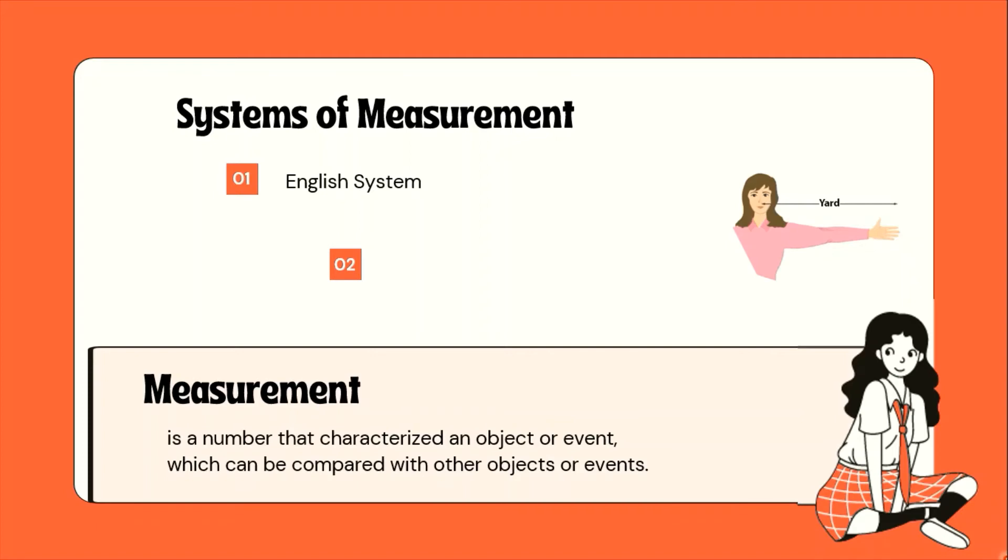Aside from English system, we also have what we call the metric system. Itong metric system, it only became the most used system of measurement by the 1900s. And this is first described by the Belgian mathematician Simon Stephen in his booklet, the tiende, or the art of tense. Dahil ang metric system ay nakabase sa per tense. Kada sampu yung kanyang bilang.